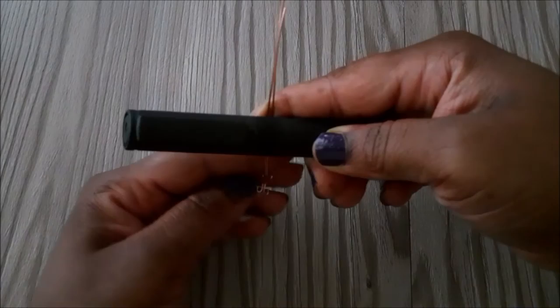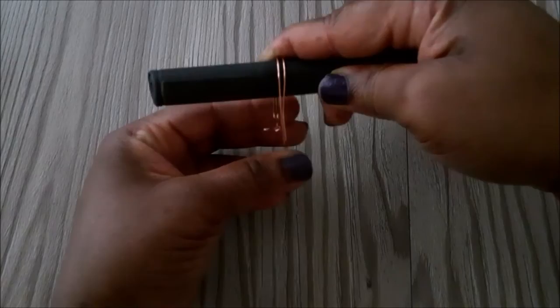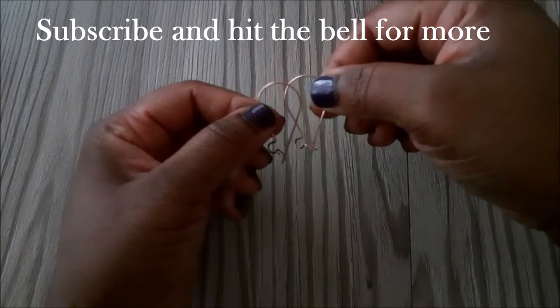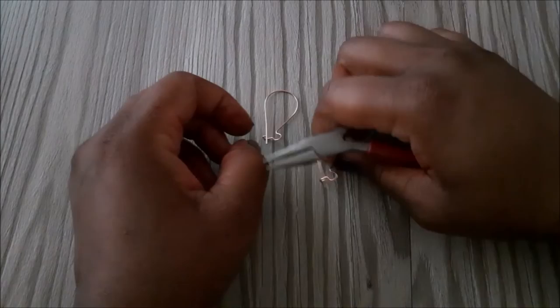So next you're just going to take the tails of the wires and bring them over to the other side, then remove your marker. At this point you can basically shape it the way that you want it to be.